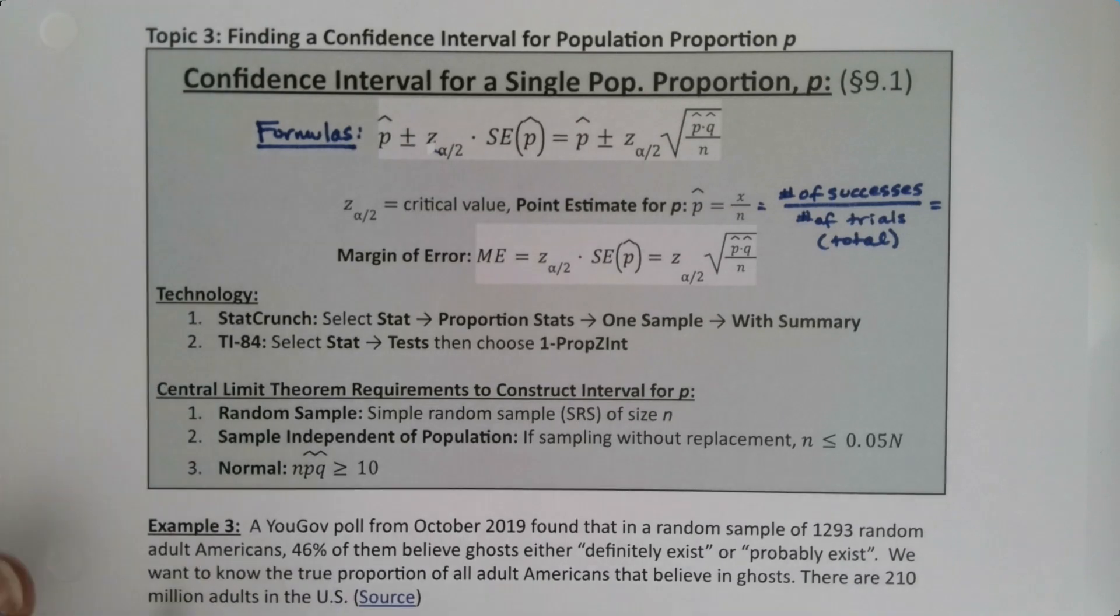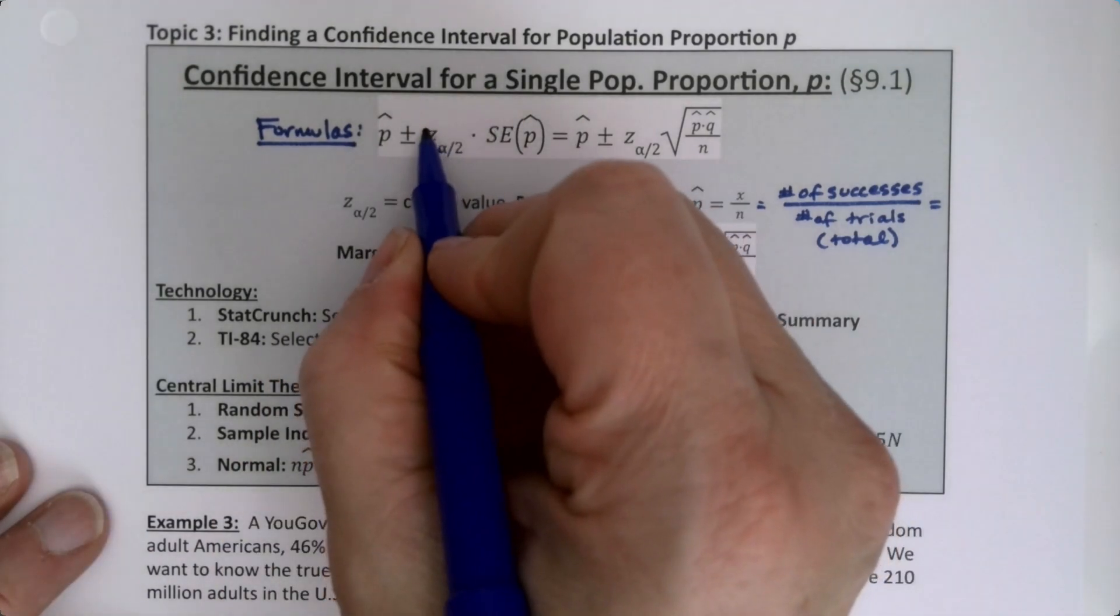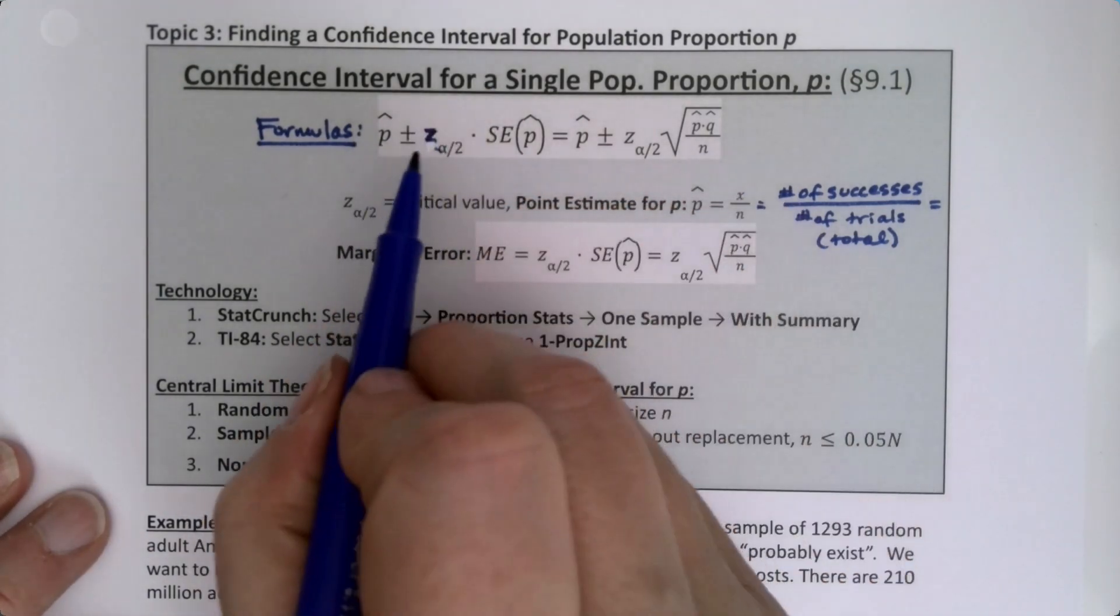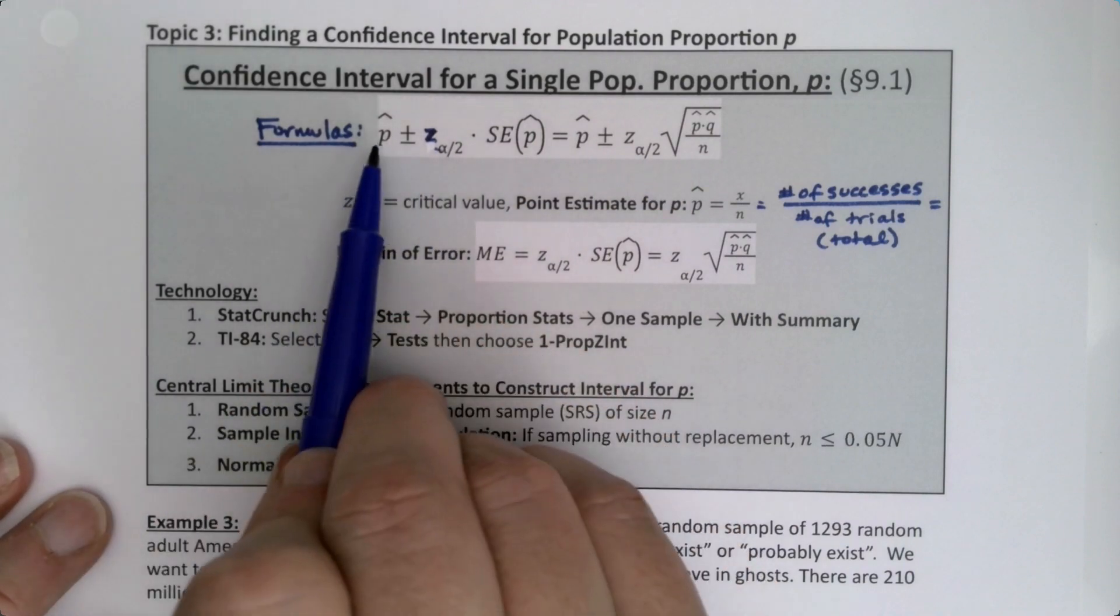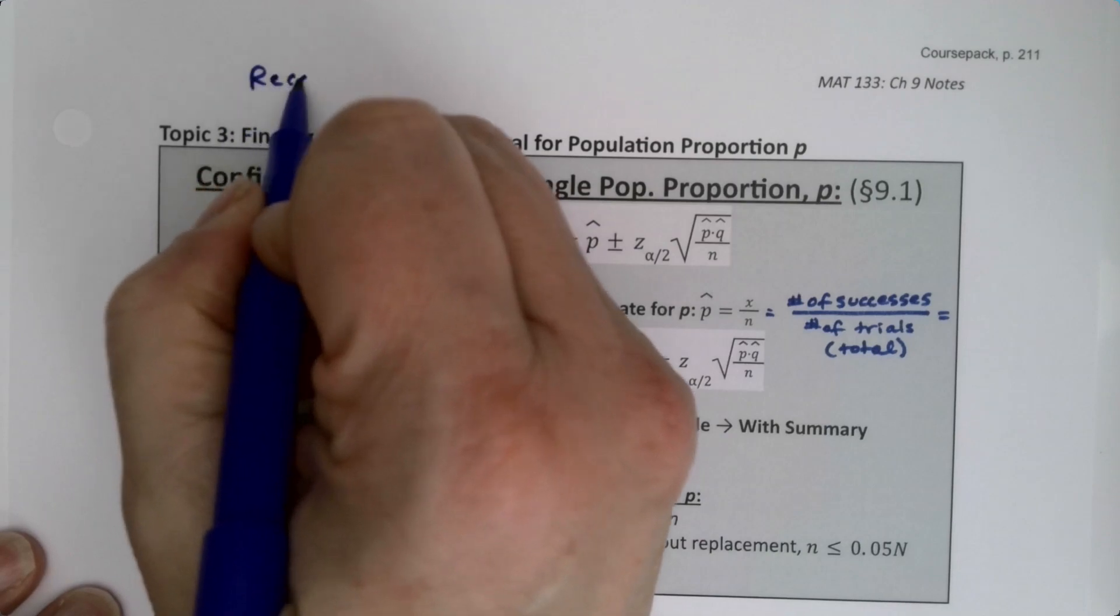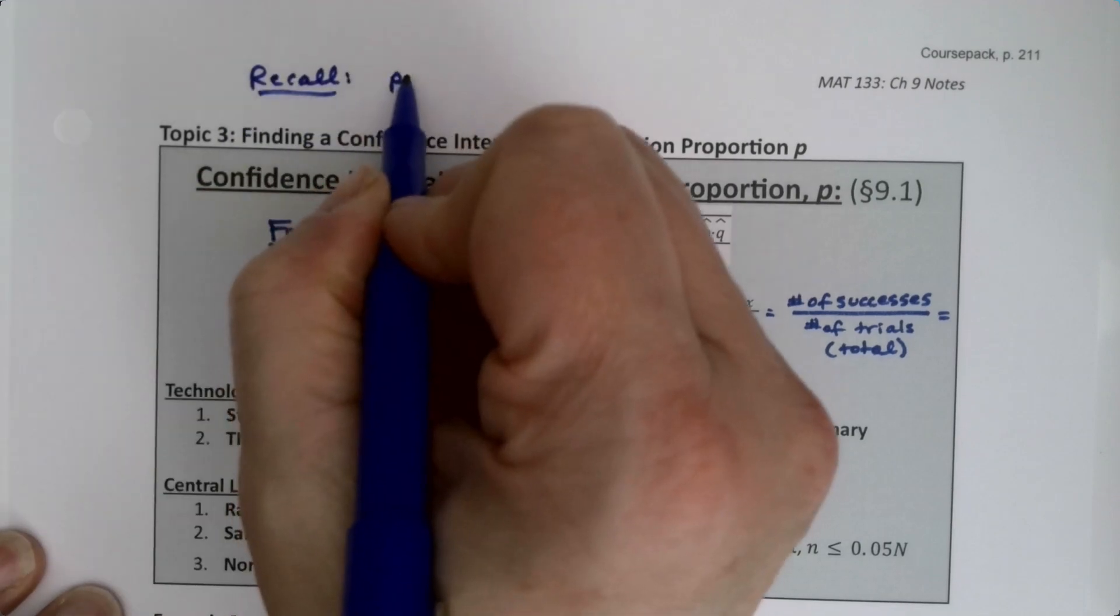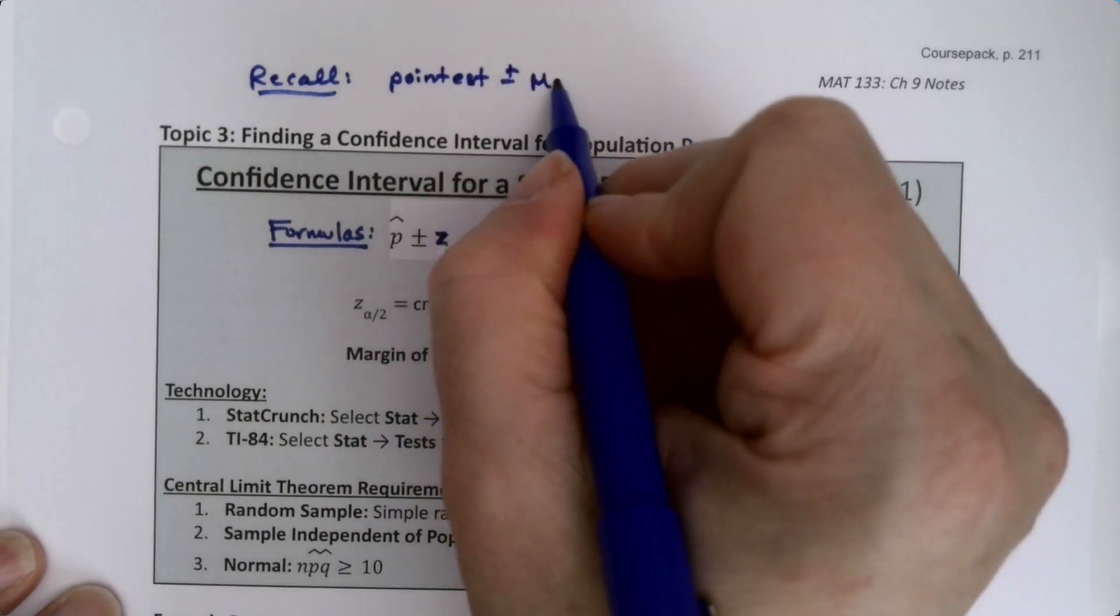We have two formulas up here. The basic structure, as I'll write it, is always point estimate plus or minus your margin of error.